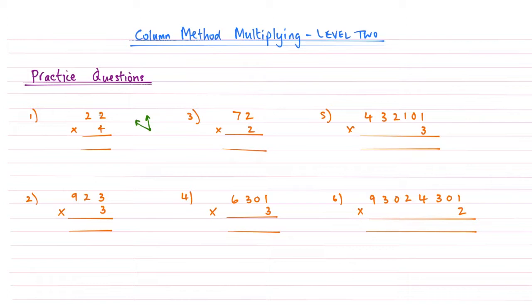So 4 times 2, so we're multiplying upwards, that becomes 8. And then we move on to the second step, so 4 times 2, so that gives me 8. So that gives me the answer of 88.